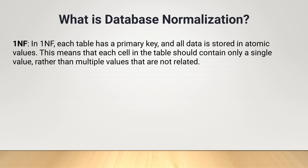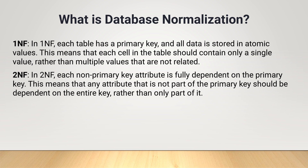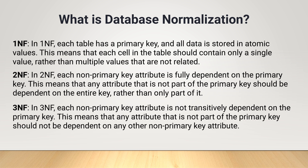1NF: in 1NF each table has a primary key and all data is stored in atomic values. This means that each cell in the table should contain only a single value rather than multiple unrelated values. 2NF: in 2NF each non-primary key attribute is fully dependent on the primary key. Any attribute not part of the primary key should be dependent on the entire key rather than only part of it. 3NF: in 3NF each non-primary key attribute is not transitively dependent on the primary key. This means that any attribute not part of the primary key should not be dependent on any other non-primary key attribute.